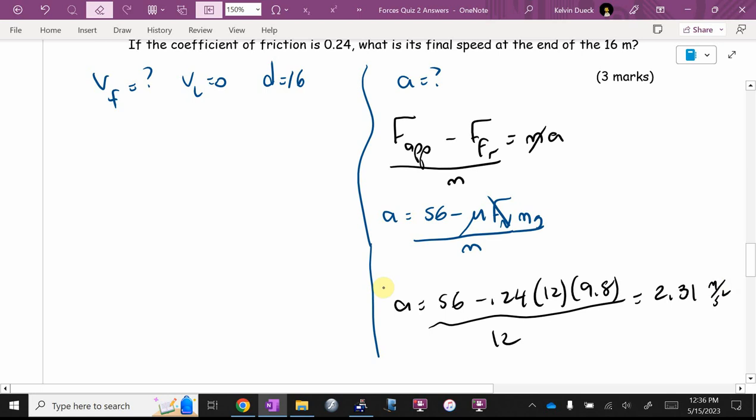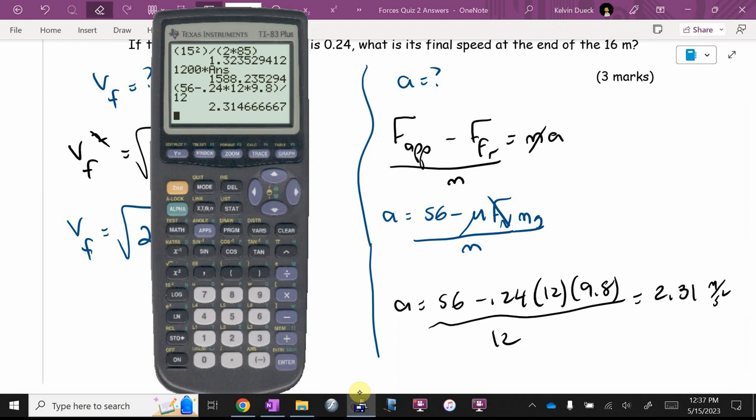Because now I think I can go VF squared equals 2AD. What happened to the VI squared? It's zero. And so I didn't bother writing it. Am I done? No, that's VF squared. How does one get rid of a squared? So it's going to be the square root of 2 times my answer button times 16. That's way too... oh, square root, square root, square root, Mr. Duke. Did you get 8.61?